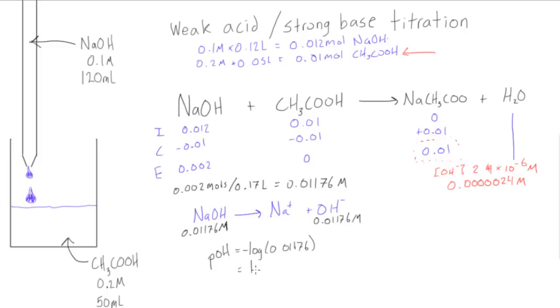So now we can find our pH of our buffer solution here that's in our beaker, it's going to be equal to 14 minus our pOH. So it's 14 minus 1.93 and we're going to find that our pH in our solution after we've titrated all this stuff is going to be equal to 12.07.